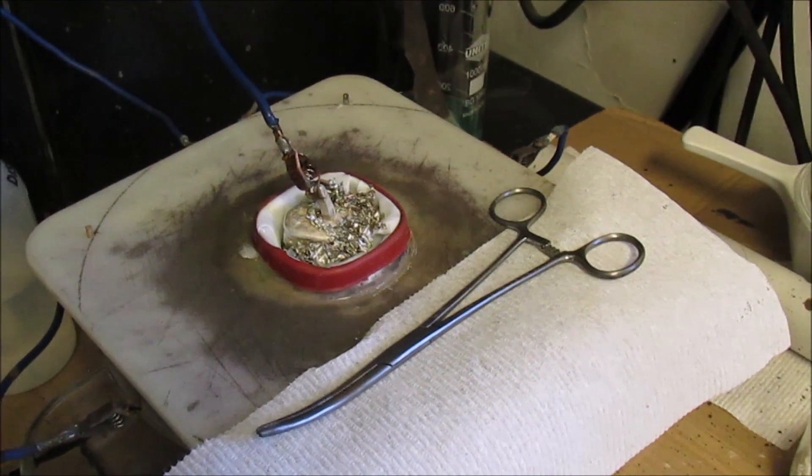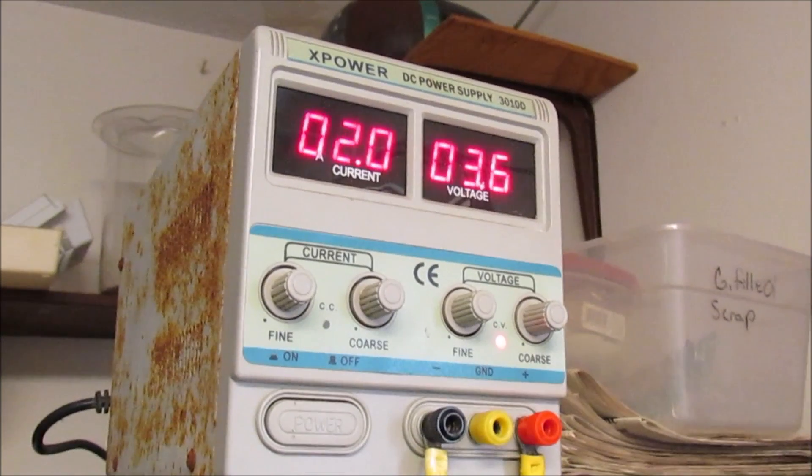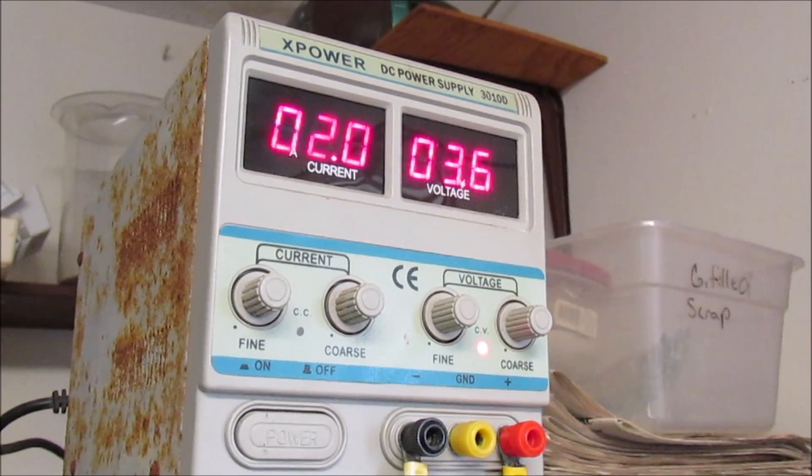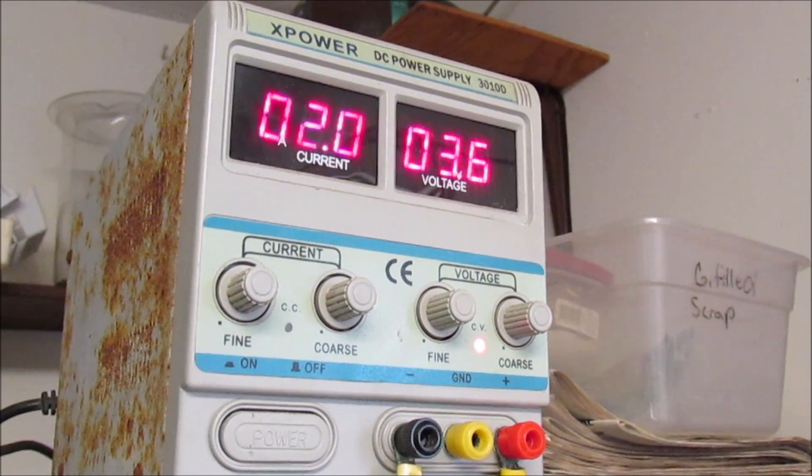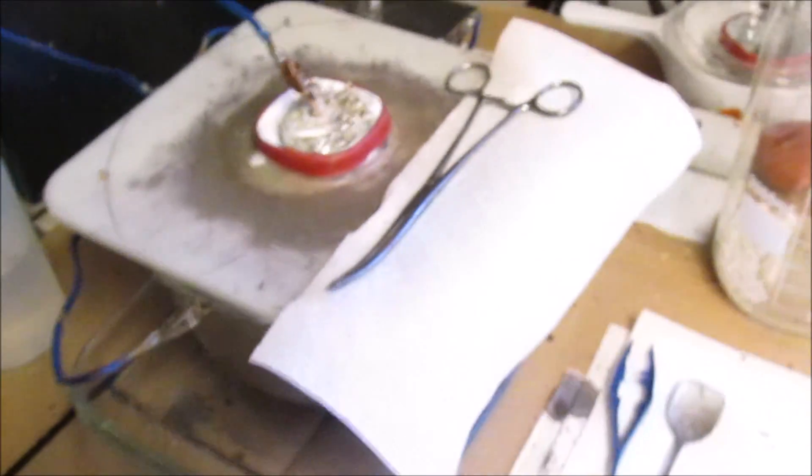Alright I've cleaned the anode bar and the clip, I've added electrolyte, put a new filter in there. Let's see what kind of conductivity we get in here now. Okay we're up over 2 amps now which is exactly what I wanted to see. It is the amperage that dissolves the silver in the silver cell.